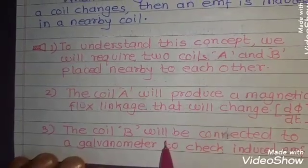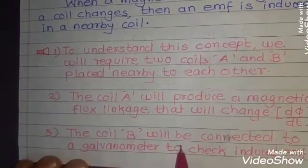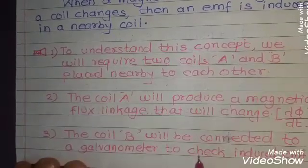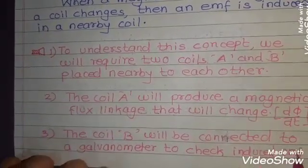Thirdly, we require the coil B and the coil B must be connected to a galvanometer to check the induced EMF in it.